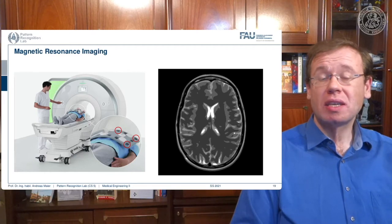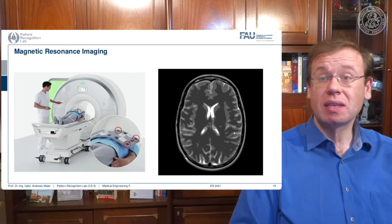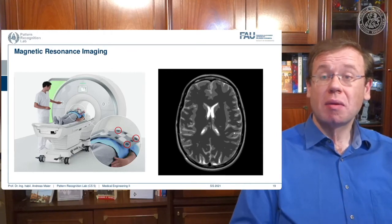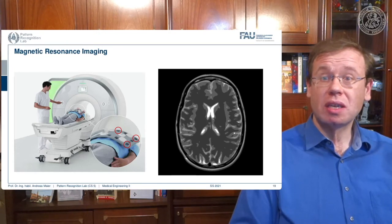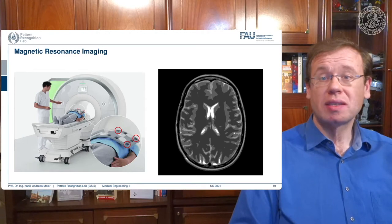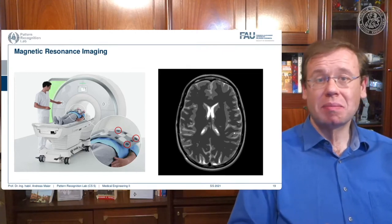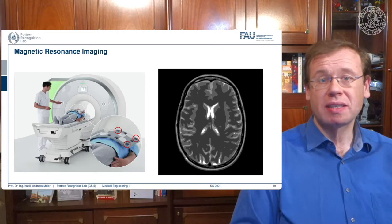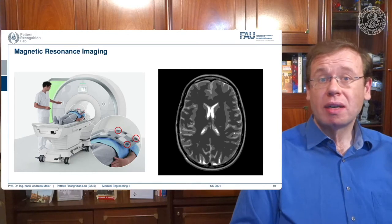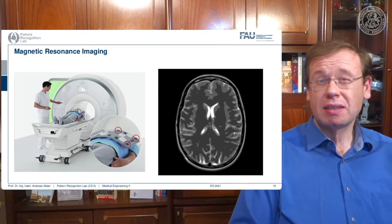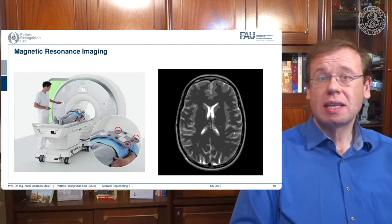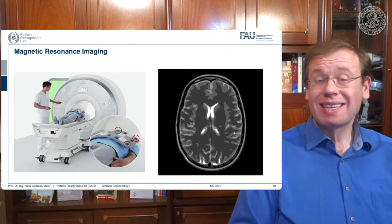We are essentially using a large magnet that applies a large external magnetic field. This magnetic field is used to orient protons inside the body into a specific direction, which then allows us to excite those protons using radio frequency radiation. These RF pulses are sent into the body and then emitted back out. The nice thing with RF pulses is they are not ionizing — they are not suspected to break down your DNA, unlike x-rays, which if overused may lead to the production of cancer. So MR imaging doesn't have this problem.